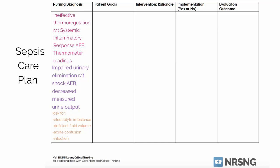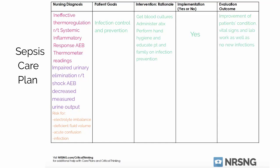For the patient's goals, the first goal I put is infection control and prevention, because this is really, really important. We don't want to spread whatever they have to anyone else, but more importantly, we don't want to give them anything else to fight. This means getting blood cultures first — always important before starting antibiotics — then administering antibiotics, performing hand hygiene, and educating the patient and their family on infection prevention, such as washing hands before and after touching the patient and when leaving the room. We'll evaluate by monitoring vital signs and lab work for improvement and absence of new infections.